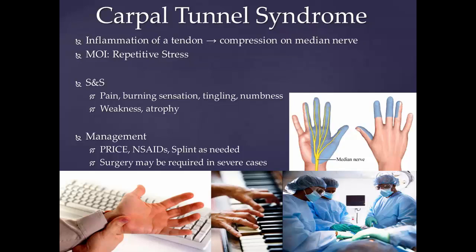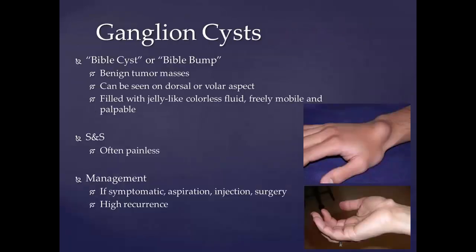A ganglion cyst is also known as Gideon's disease, a Bible cyst, or a Bible bump. It is a non-neoplastic soft tissue lump that may occur in any joint, but most often occurs on or near joints or tendons in the hands and feet. These cysts are caused by leakage of fluid from the joint into surrounding tissue. The average size is about two centimeters, but removed cysts have measured more than five centimeters.